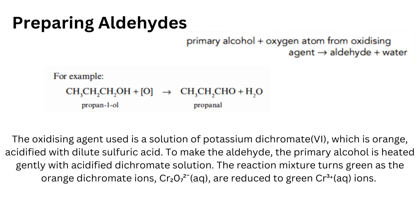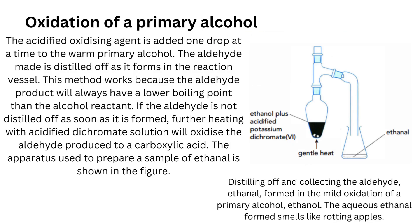To prepare aldehydes: primary alcohol plus oxygen from an oxidizing agent gives the aldehyde and water. For example, propan-1-ol on oxidation gives propanal and water. The oxidizing agent is potassium dichromate(VI), which is orange, acidified with dilute sulfuric acid. The primary alcohol is heated gently with the acidified dichromate solution, and the reaction mixture turns green as the orange dichromate ions are reduced to green Cr³⁺ ions. The aldehyde is distilled off as it forms, because the aldehyde product will always have a lower boiling point than the alcohol reactant. If the aldehyde is not distilled off immediately, further heating will oxidize it to a carboxylic acid.